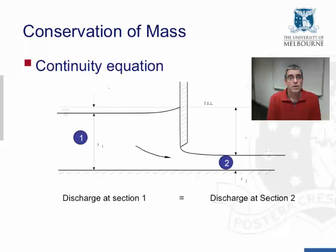And so with this reduction in the flow depth, assuming the width remains the same, the velocity must increase to maintain the same discharge. So that's the principle of the conservation of mass. And from that principle, we get the continuity equation.